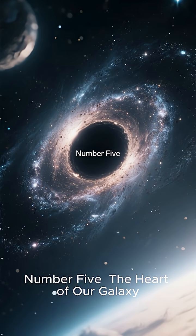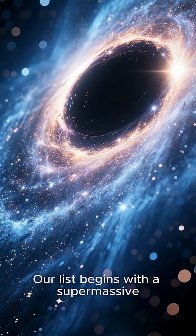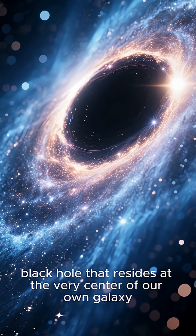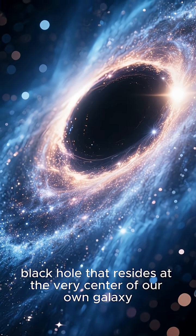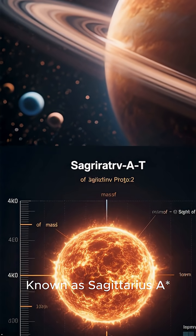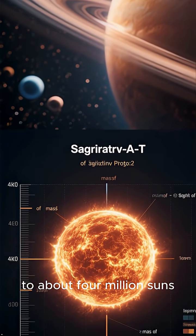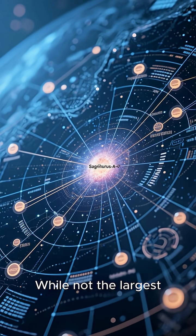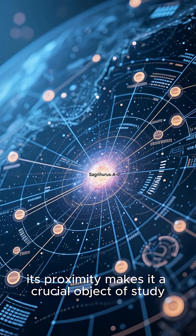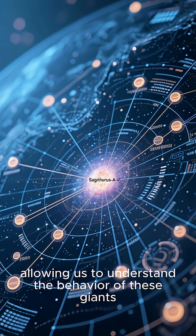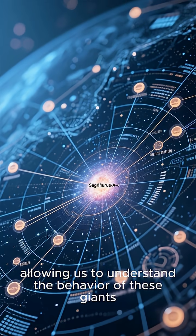Number 5: The heart of our galaxy. Our list begins with a supermassive black hole that resides at the very center of our own galaxy, known as Sagittarius A. This cosmic behemoth has a mass equivalent to about 4 million suns. While not the largest, its proximity makes it a crucial object of study, allowing us to understand the behavior of these giants.